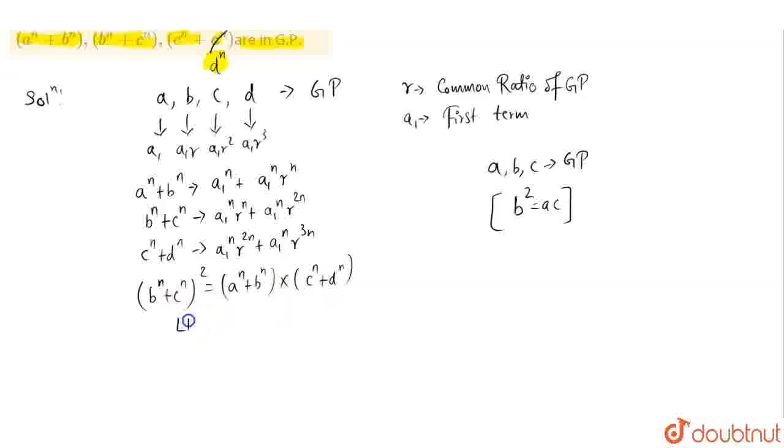Starting with LHS, LHS is B power N plus C power N whole square. A1 power N can be taken common. Wait a minute, it will be A1 power 2N into R power N will be common, and we're left with 1 plus R power N.